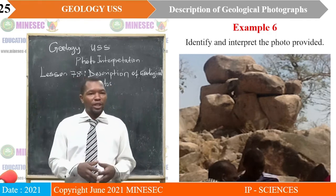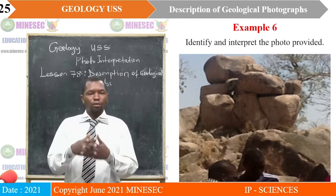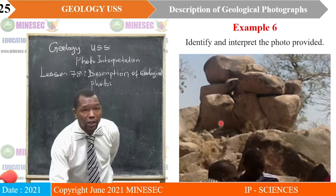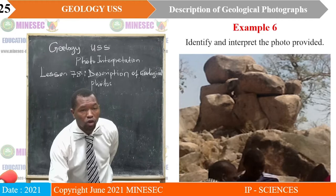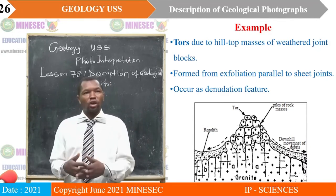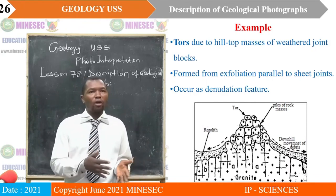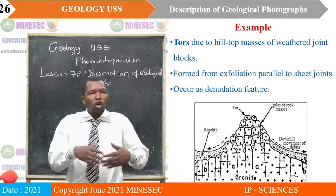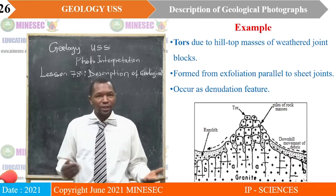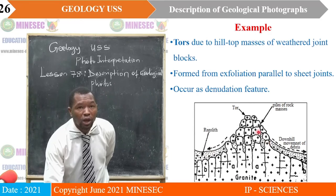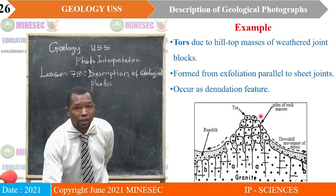Example six: identify and interpret the photograph provided. Here you have rock masses standing on each other, most likely with horizontal joints or horizontal fractures — so that is a tor, due to heaped masses of weathered joint blocks. They are formed from exfoliation parallel to sheet joints, and they occur as denudational features because they are features related to weathering. In the diagram, you have regolith — material that has moved downhill — and you have the tors, which are blocks of rock standing on each other, with the joints visible.